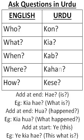Now that you know these basic words, you could try adding 'hai' at the end, which means 'is'. For example, Kya hai? — What is? Or Kaan hai? — Who is?